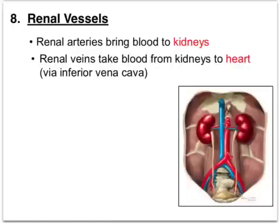The eighth set of major blood vessels are the renal vessels. 'Renal' means kidneys — you may have heard it in terms like renal dialysis or renal failure. The renal arteries bring blood to the kidneys and the renal veins take blood away from the kidneys back to the heart. Because the kidneys are in the lower body, the renal veins feed into the inferior vena cava. The kidneys sit on either side of your spinal column.